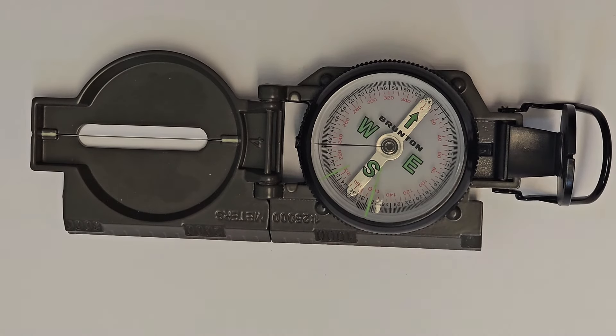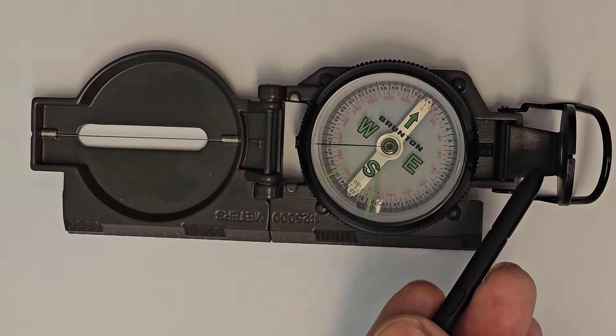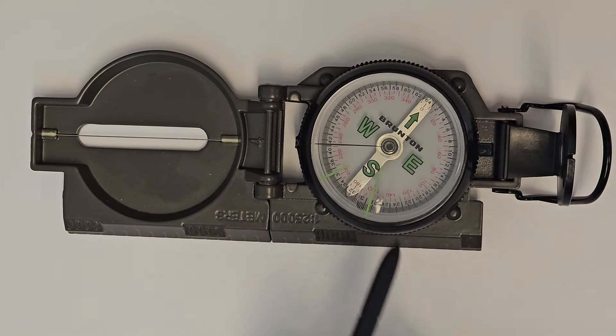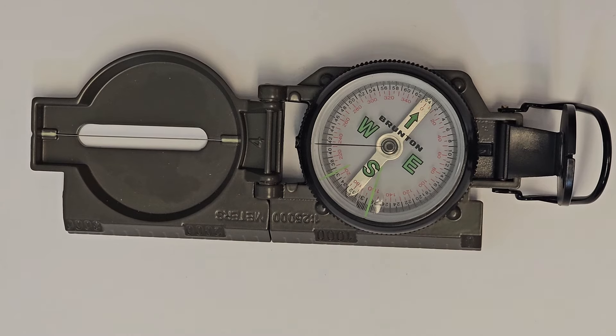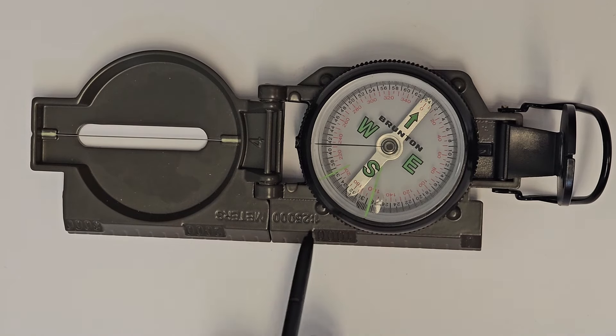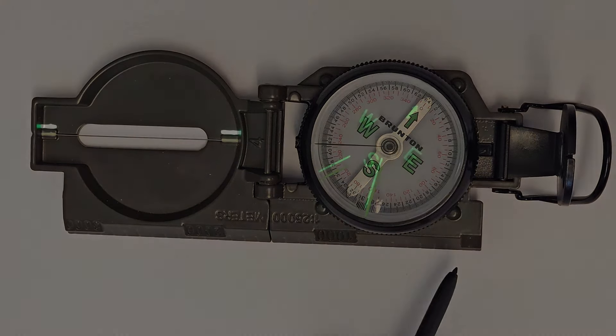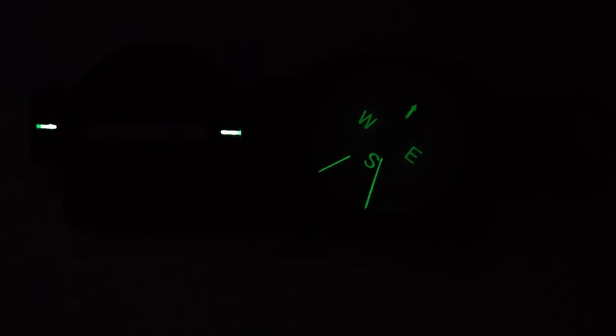As the lensatic name suggests, you take a sighted bearing, or some countries call that shooting an azimuth, by looking through a lens at a rotating disc which is marked in mils and degrees. There's a 1 to 50,000th scale on the straight edge and there are a number of luminous points that you can use when you're using this at night.